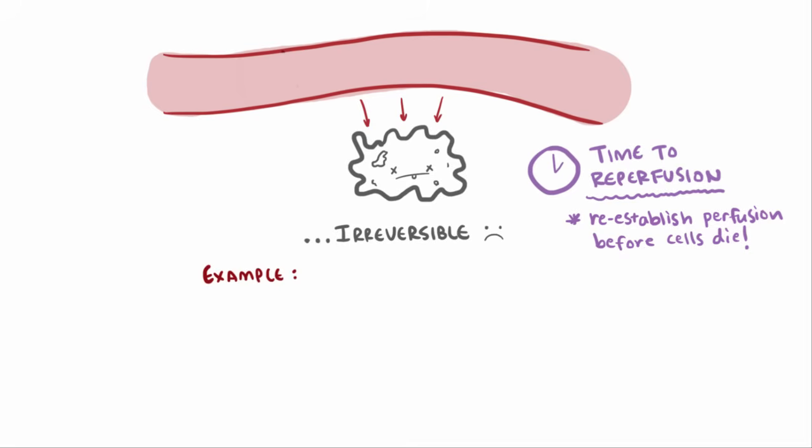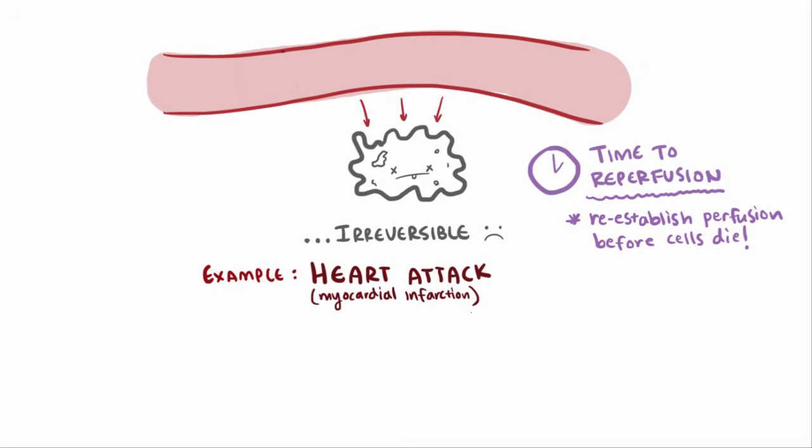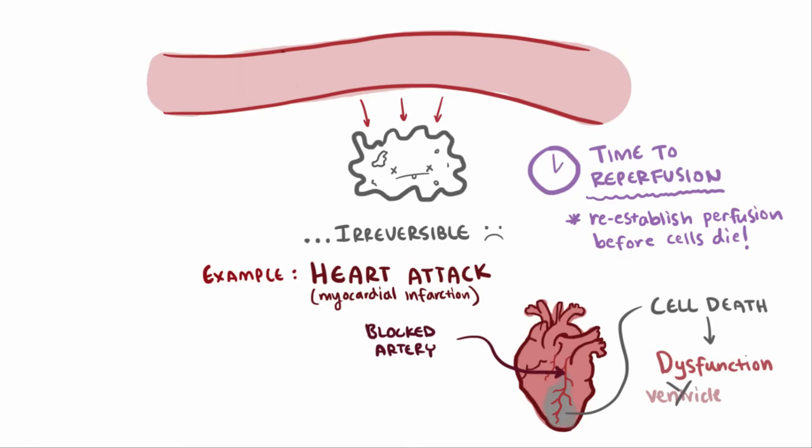One example of irreversible ischemic damage is something like a heart attack or myocardial infarction, where an artery supplying a specific part of the heart with blood becomes blocked, causing death of that part. Depending on the area affected, this could cause serious heart dysfunction. Like if enough of the heart's ventricle was damaged, it might not be able to pump blood as well anymore.